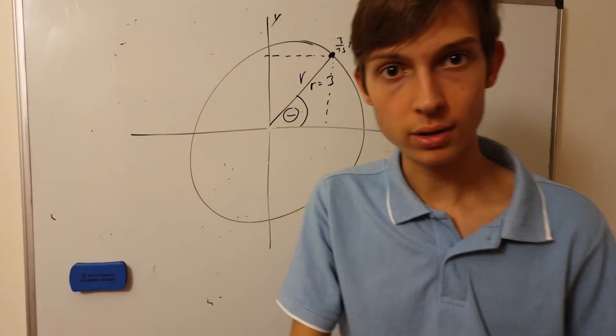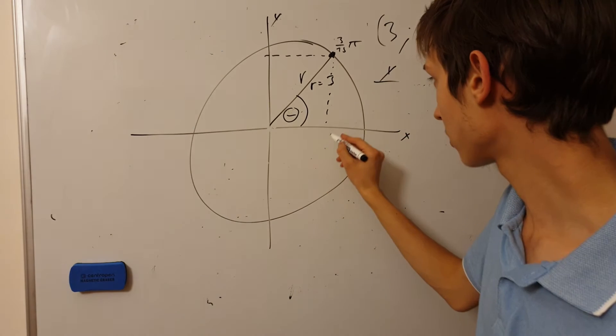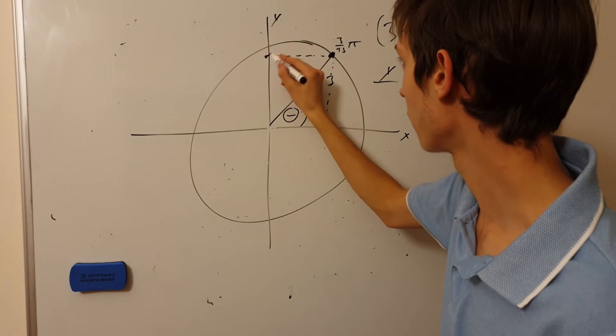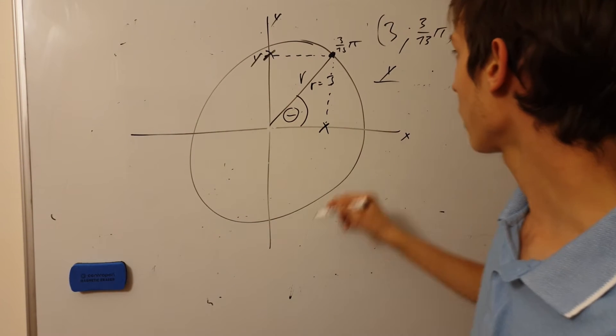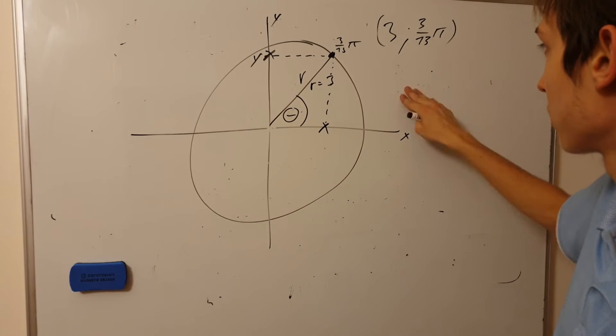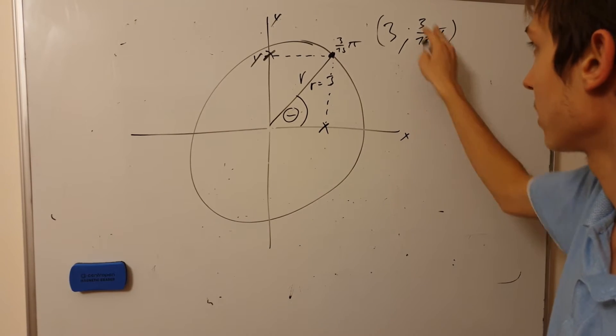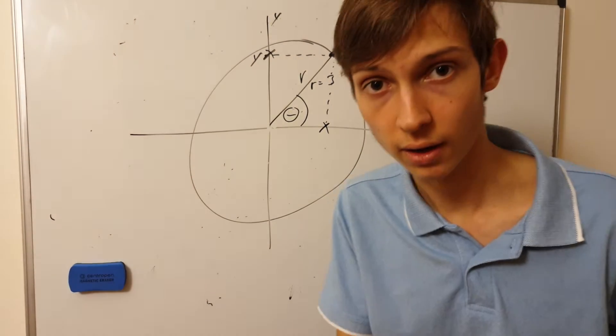Now, if you want to convert it into what it is for x, so what is the x-point right here and the y-point right here? Well, I'll just quickly re-initiate what I was trying to say here a few moments ago before I started explaining the polar coordinates.